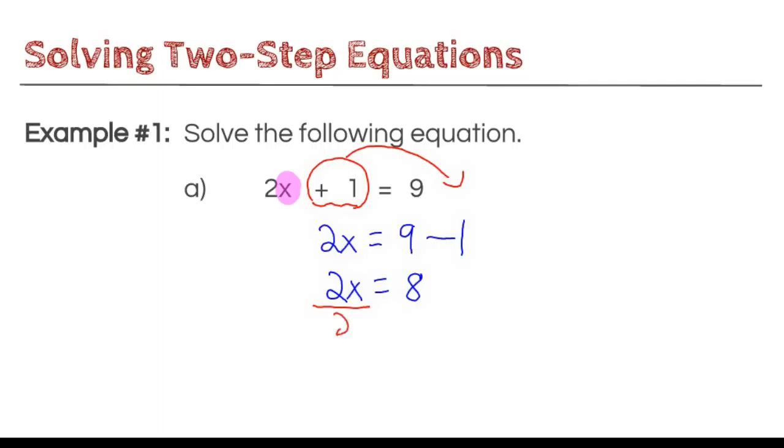So now I'm going to look, what operation is going on with x and the 2? It's multiplication. So, of course, the opposite operation to multiplication is division. So I'm going to divide out the 2. Whatever I do to one side, I'm going to do to the other side of that equation. That allows me to cancel out those 2s. 2 divided by 2 leaves me with 1x. And simply, I'm going to write that as x. And 8 divided by 2 leaves me with 4. And now I have a complete solution.